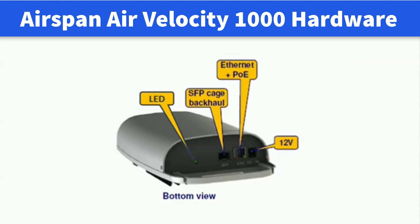This slide shows the bottom view of AirVelocity 1000 port details. The ports discussed in the previous slide are clearly visible in the bottom view. The ports are the SFP port, Ethernet port, and 12V DC port. We can also see there is an LED which shows the device status.